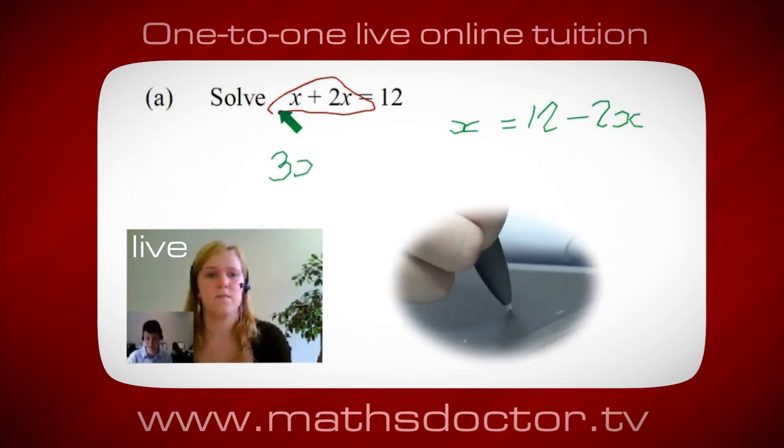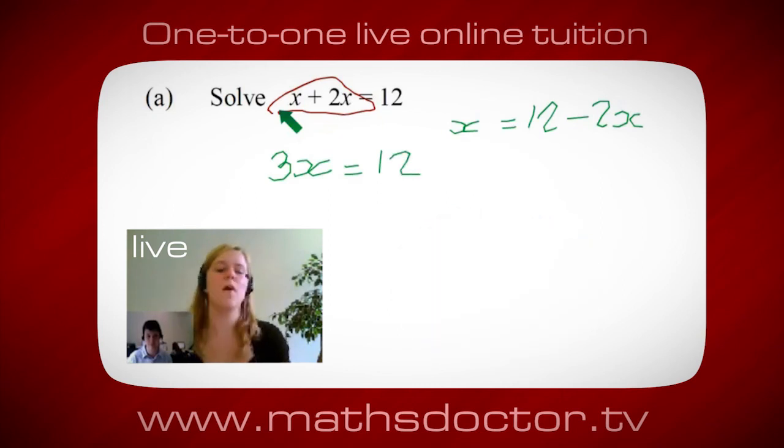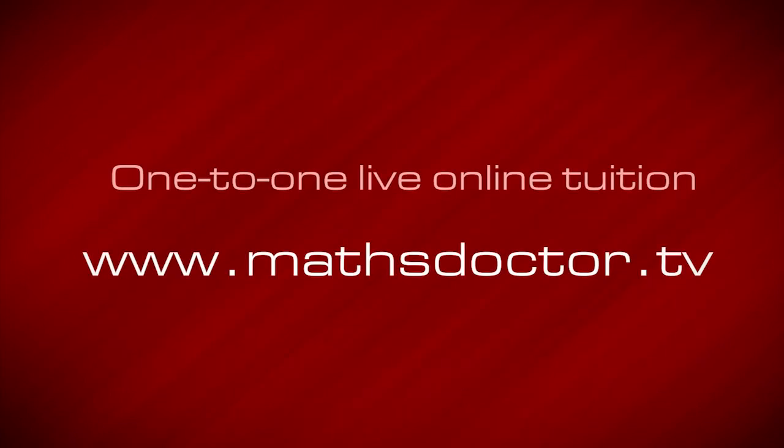Yeah, absolutely. So 3x = 12. Oh, and so x = 4. Brilliant, spot on, well done.